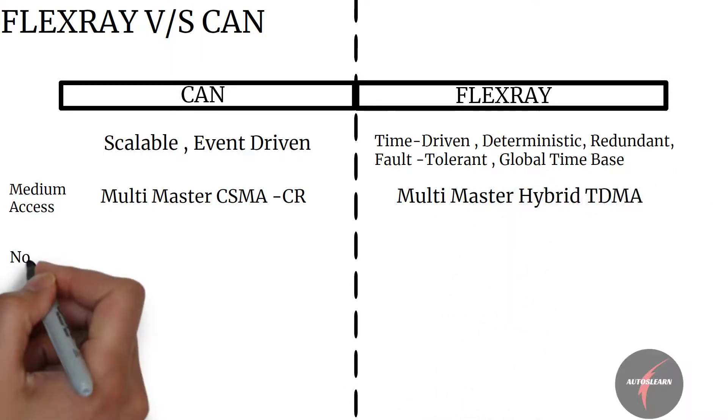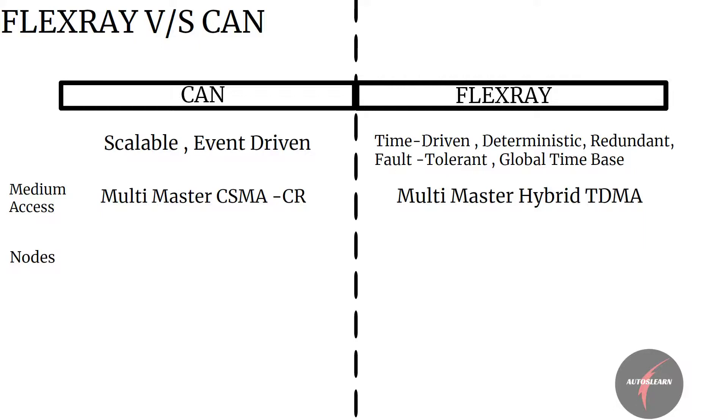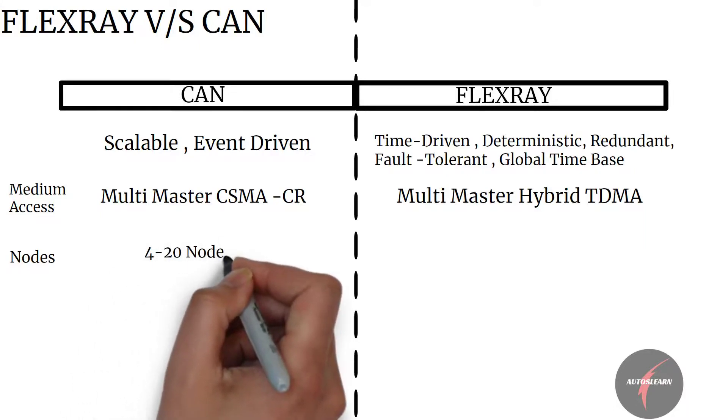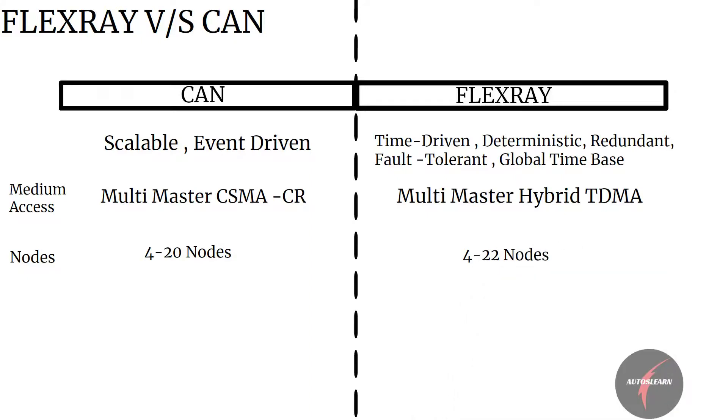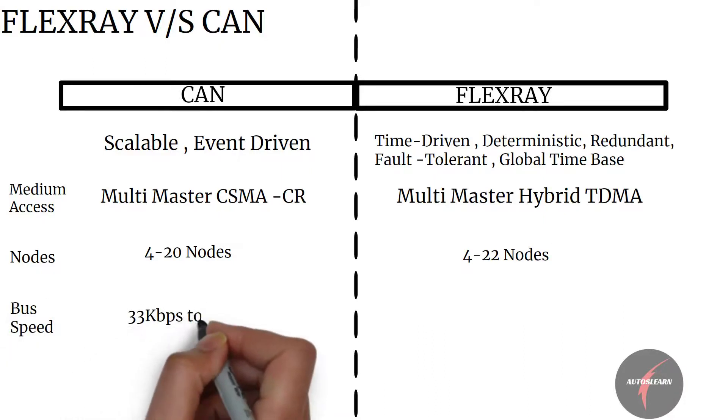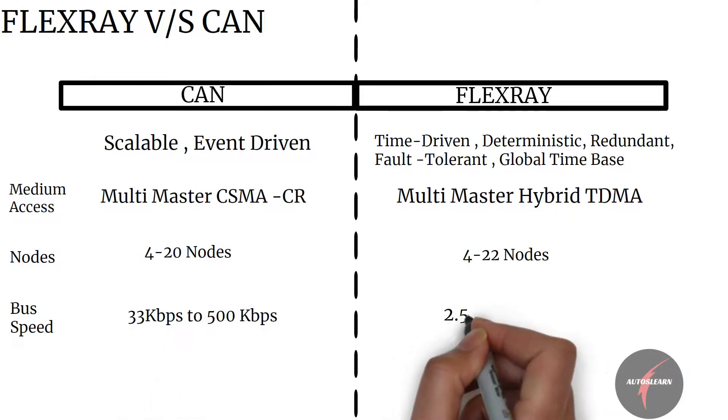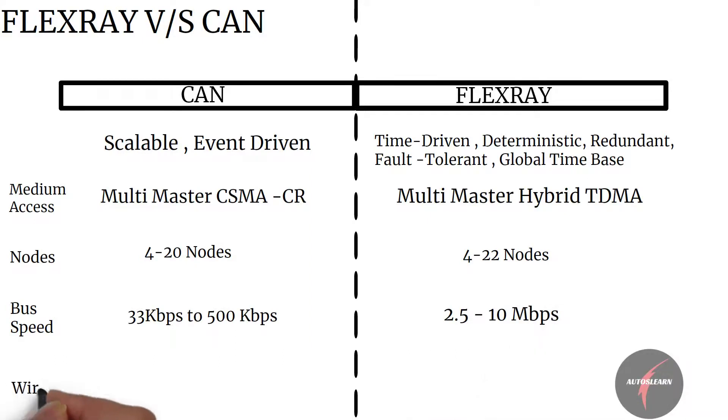Looking into nodes, CAN supports 4 to 20 depending on the distance or topology. FlexRay supports around the same, 4 to 22 depending on distance or topology. Bus speed: CAN supports 33 kbps to 500 kbps typically, 1 mbps capability. FlexRay supports 2.5 to 10 mbps.